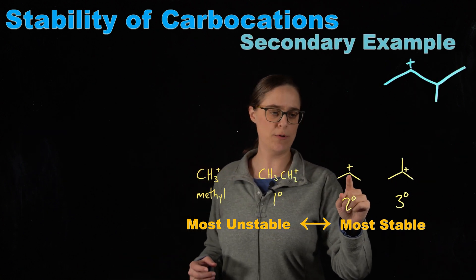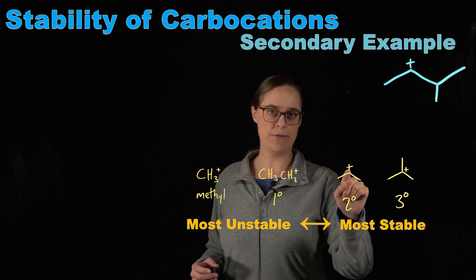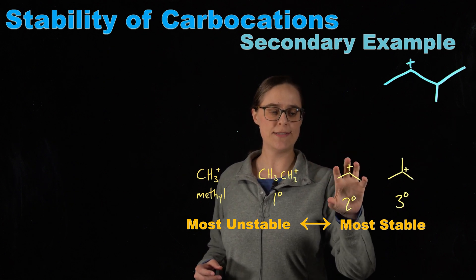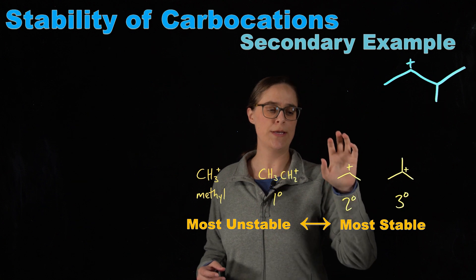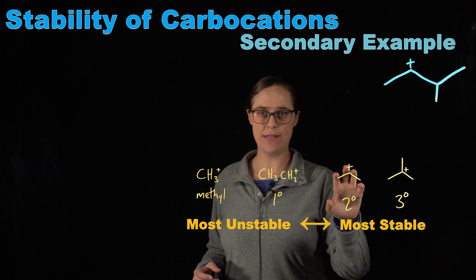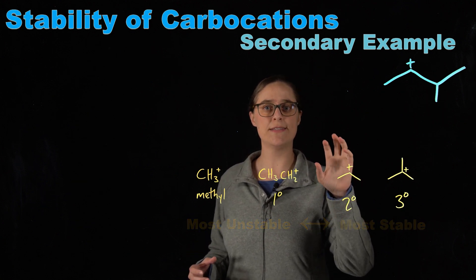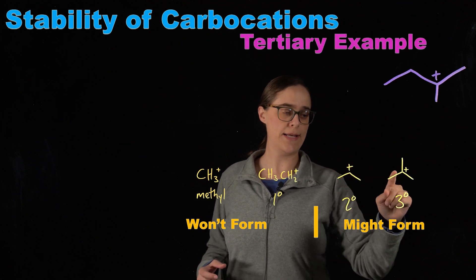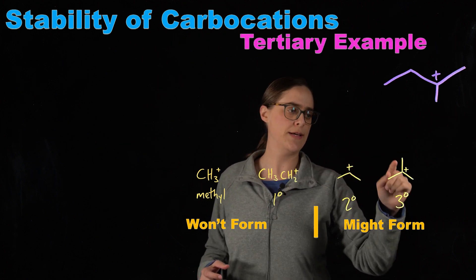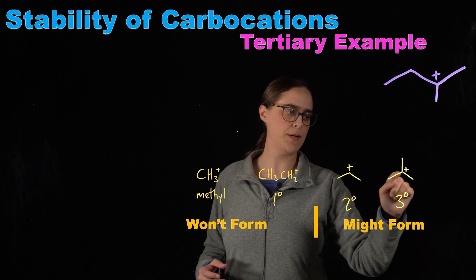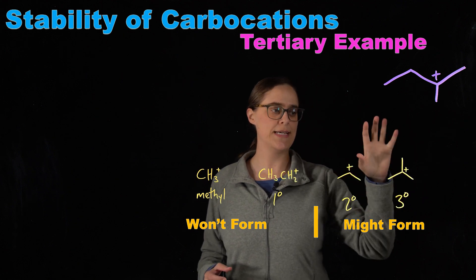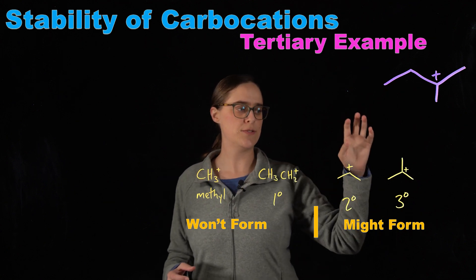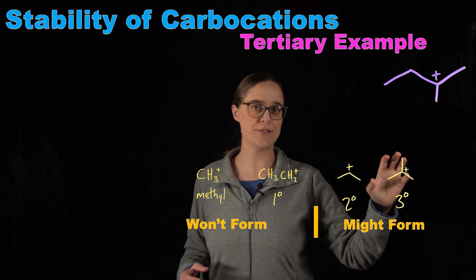A secondary carbocation is one where the carbon with the positive charge is bonded directly to two other carbons. This is more stable than the previous two — we are finally stable enough that in a lot of cases you would be able to predict that this could actually form. And a tertiary carbocation is one where the carbon with the positive charge is bonded directly to three other carbons. This is the most stable out of all of these, so this is something that can actually form.